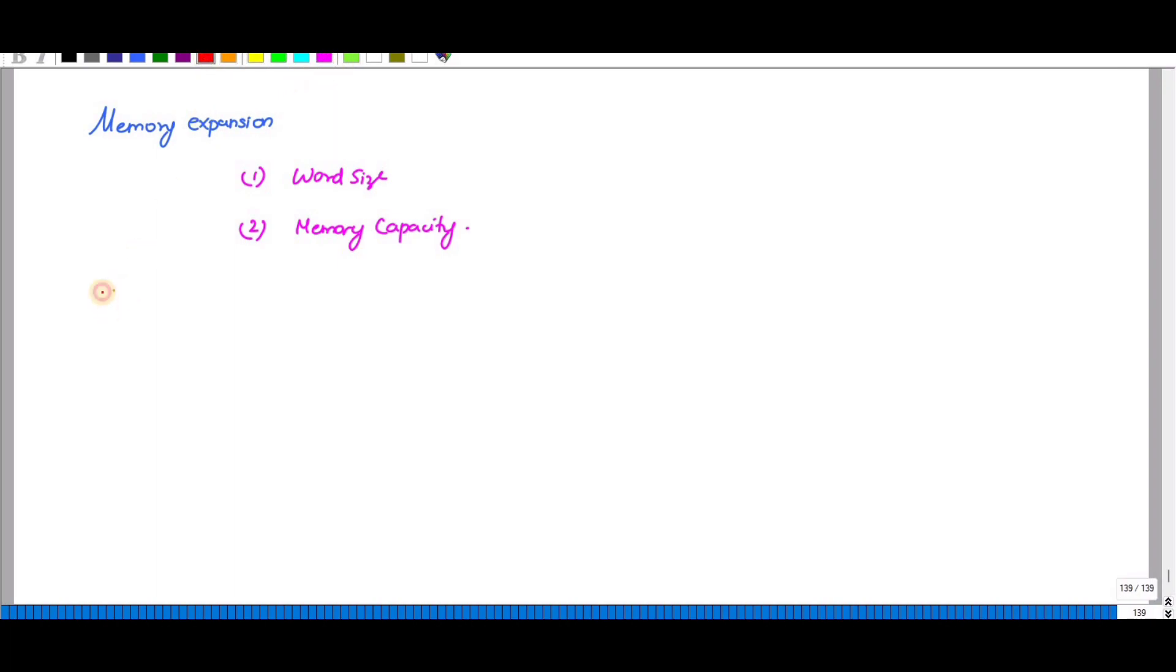First, let us discuss expanding the word size. It is possible to expand the word size of memory by connecting two or more ICs together. The word size can be increased by connecting two memory ICs in such a way that their data buses are in series and the address buses are in parallel.